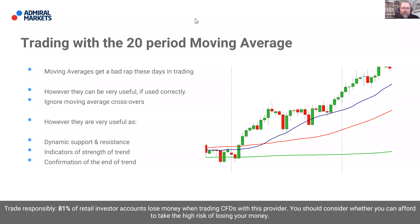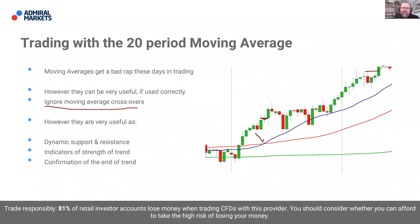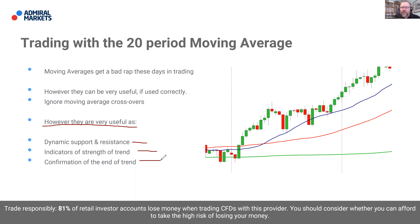I'm a better trader than I am an artist, so I ask your forgiveness with some of my scribbles on the chart. Moving average crossovers as a trade signal — do yourself a favor and move on from that. They're not necessarily helpful, but what they are very useful as is providing dynamic support and resistance, an indication of the strength of the trend, and also — what we're going to use today — confirmation of the end of the trend.